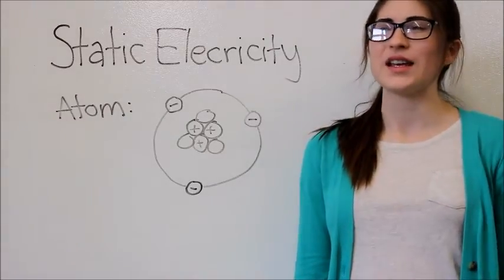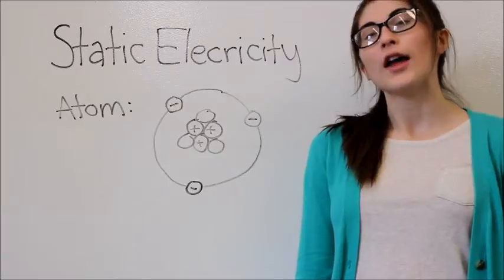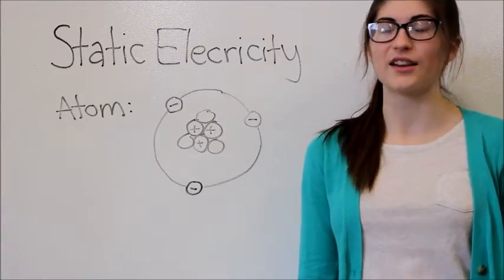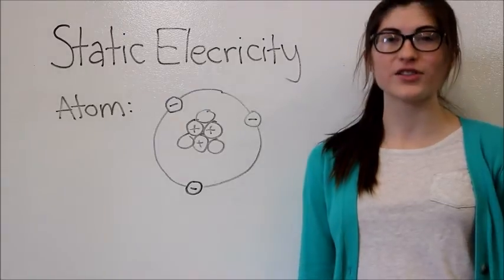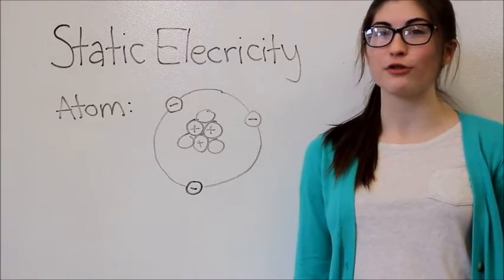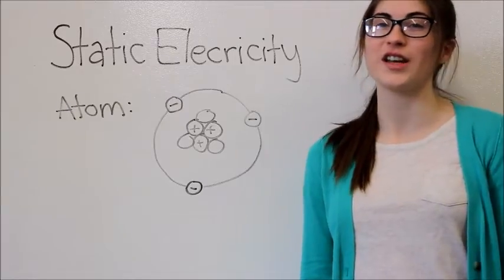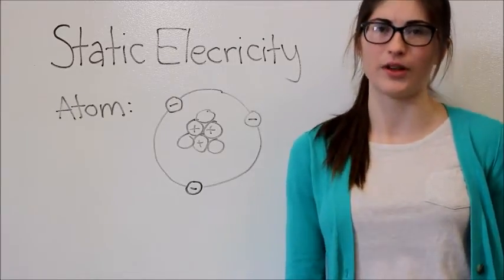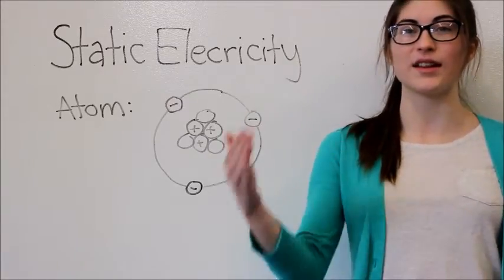One good example of this is something that you've probably done with your friends. Have you ever been in a room with a carpet and you rubbed your feet against that carpet and then went and touched a friend and it shocked them? Well that is a result of the electrons moving from the carpet to your feet. That way, you are negatively charged so that when you touch a positively charged person who hasn't rubbed their foot against the carpet, it shocks them because it transfers the electrons back to them.